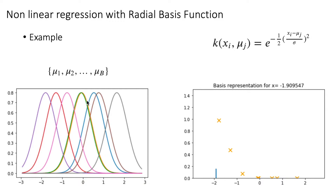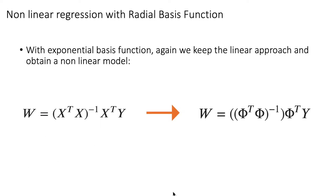We can think of these basis functions as radars or sensors placed in different areas of the data. For each data point, we transform it into the resulting value of how the sensor responds to our data point across the area where the data lives. We just need to transform the x matrix to phi, and then apply exactly the same equation for the linear model — but we will end up with a nonlinear fitting.